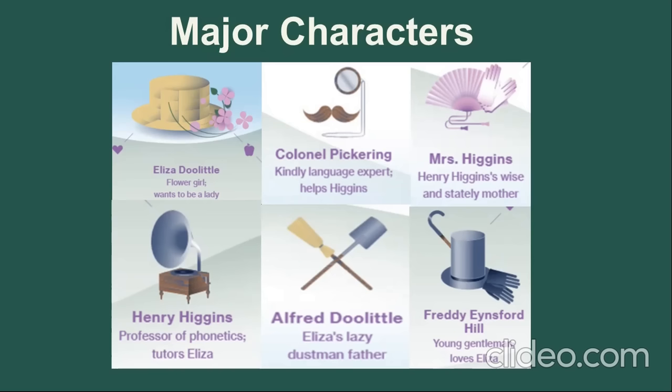Another character is Colonel Pickering. Colonel Pickering is a linguist who challenges Professor Higgins to transform Eliza Doolittle into a duchess. Colonel Pickering funds Professor Higgins' work with Eliza and is considerate and very kind to her. Next is Alfred Doolittle. Alfred Doolittle is Eliza's materialistic father who tries to obtain money when he learns Professor Higgins is working with Eliza. Then there is Mrs. Higgins, who is Professor Higgins' mother and who disagrees with Higgins and Pickering's plan to try to change Eliza into a duchess.